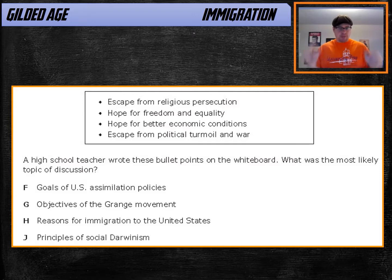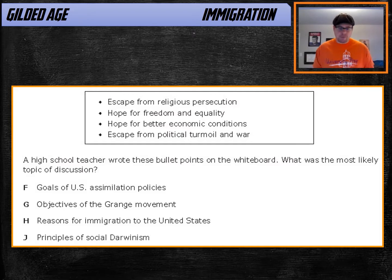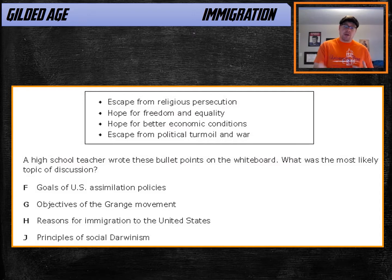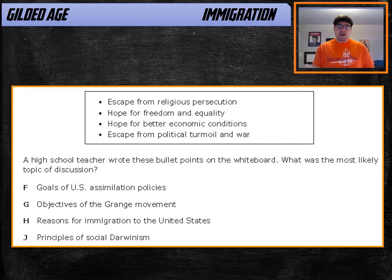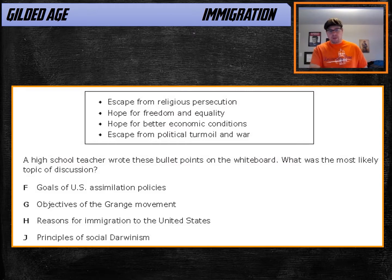This particular question is a bit more vague. A box lists: escape from religious persecution, hope for freedom and equality, hope for better economic conditions, and escape from political turmoil and war. It asks what the topic of discussion is. The answer is 'reasons for immigration to the United States' — a fairly generalized, vague answer. But you'd also notice these fit the Eastern European cultural identification markers, especially escape from religious persecution. If you saw a more specific version, you'd be prepared for that too.